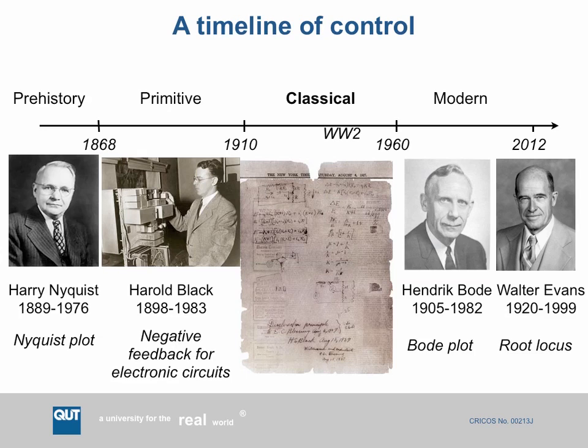There are interesting myths and legends around Harold Black. He said the idea of negative feedback came to him on the ferry going to work one day in 1927 — he bought a copy of the New York Times and wrote his ideas on it, and you can see that scribblings image from the archives. All of these guys worked for Bell Labs, an awesome research organization in the early part of the last century that invented the transistor, the laser, radio astronomy, and negative feedback. At the time it was probably the equivalent of Google.